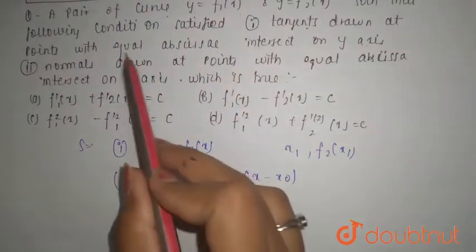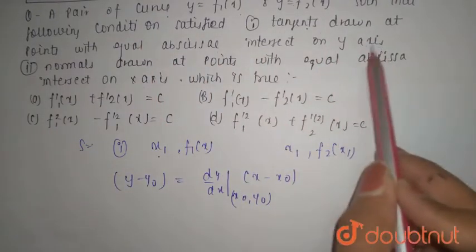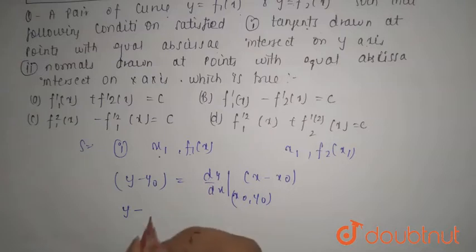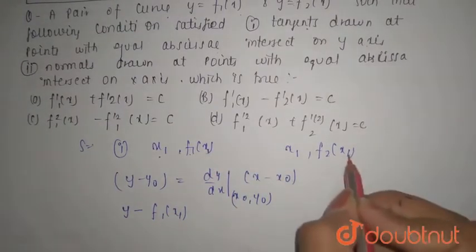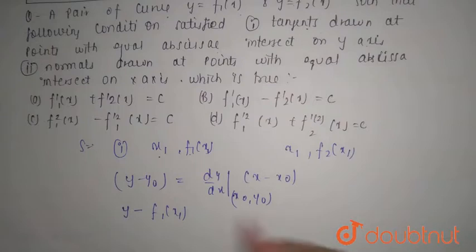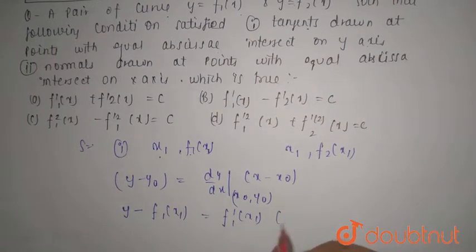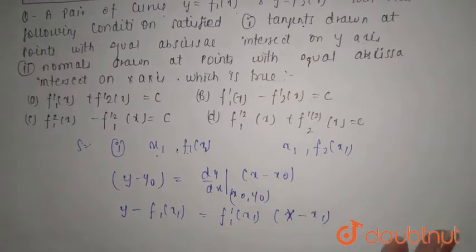Now, given that tangent drawn at points with equal abscissa intersect on y-axis, you can say that y minus f1(x1) equals f1'(x1) times x minus x1, putting the value in this equation.